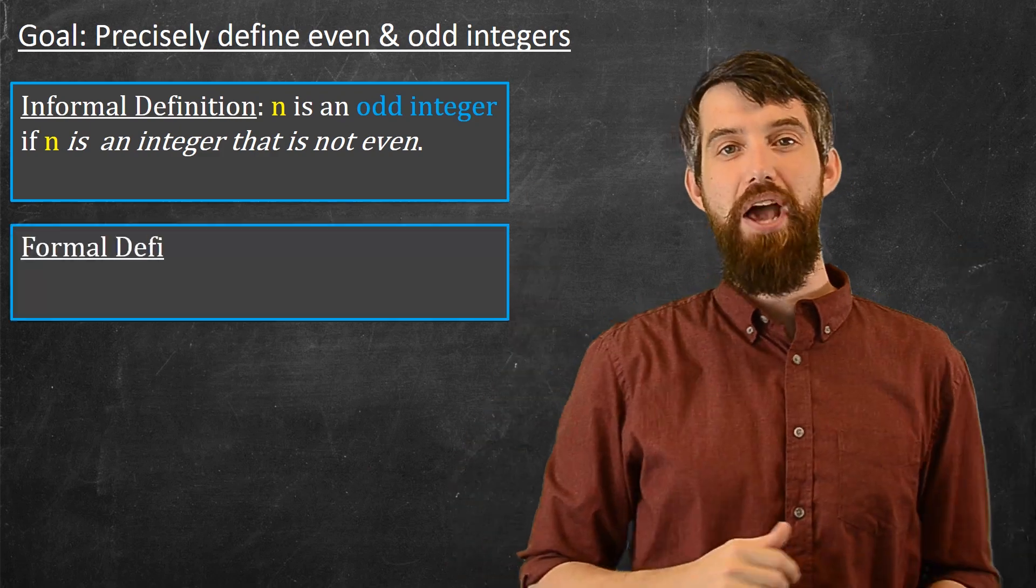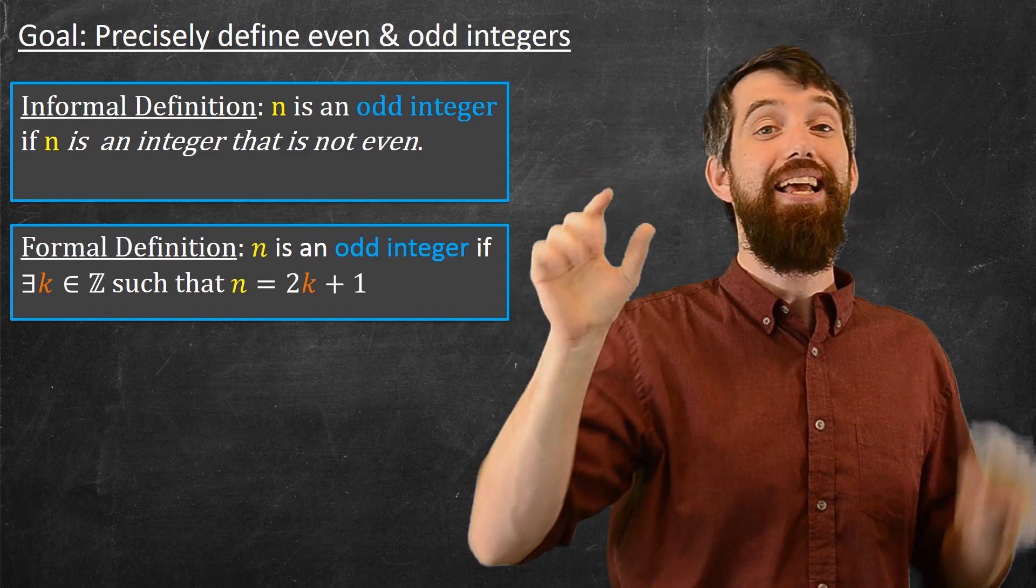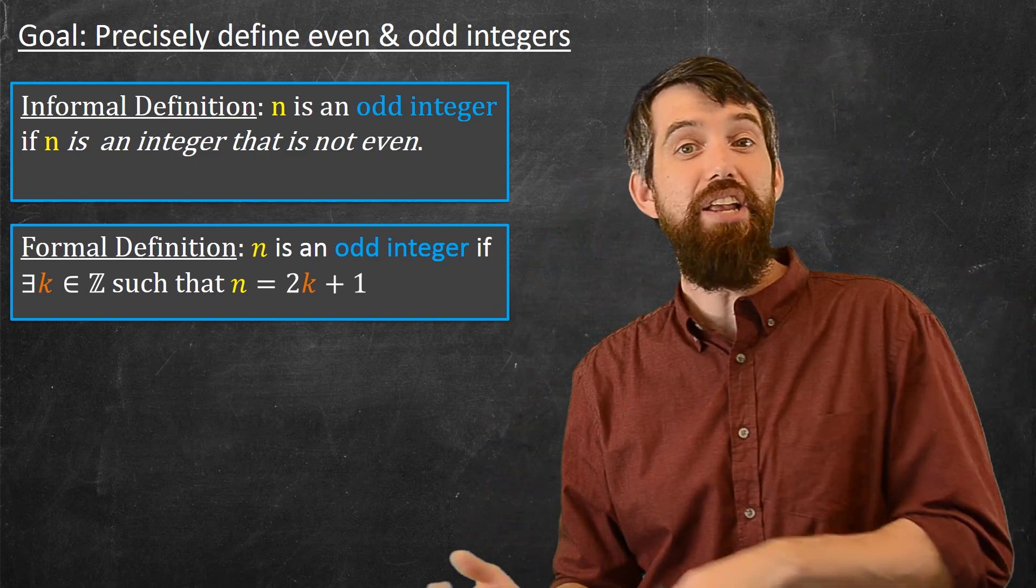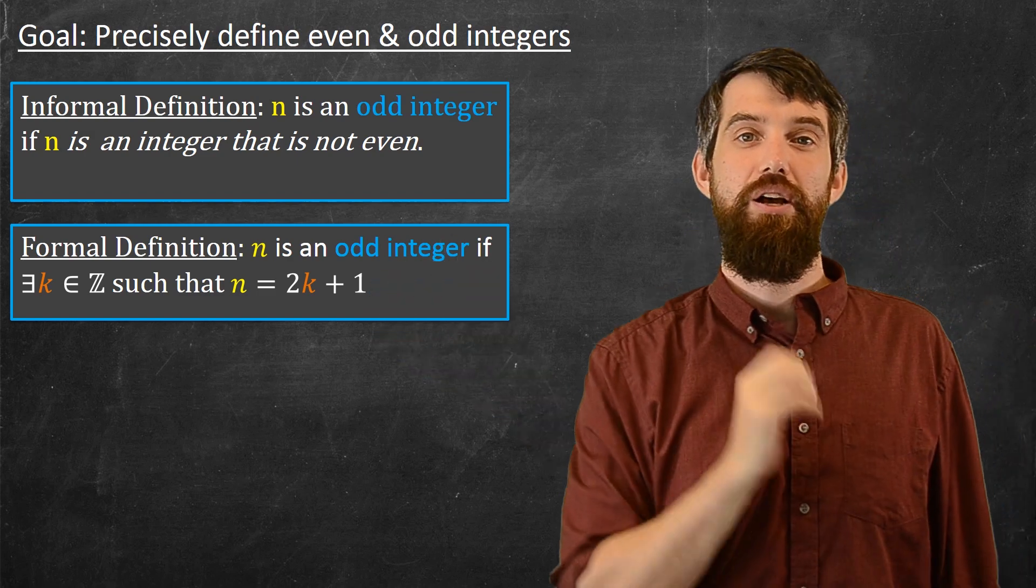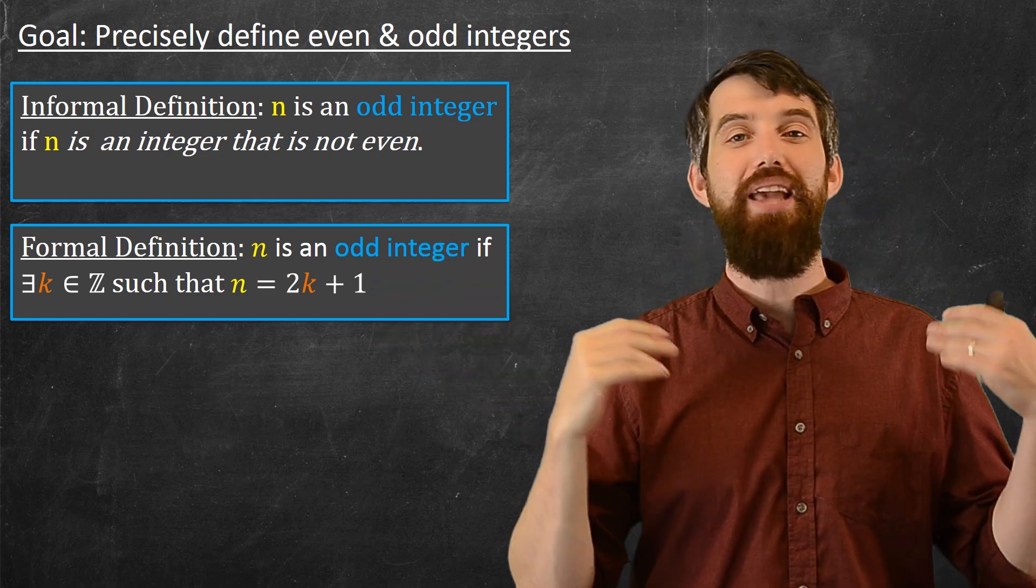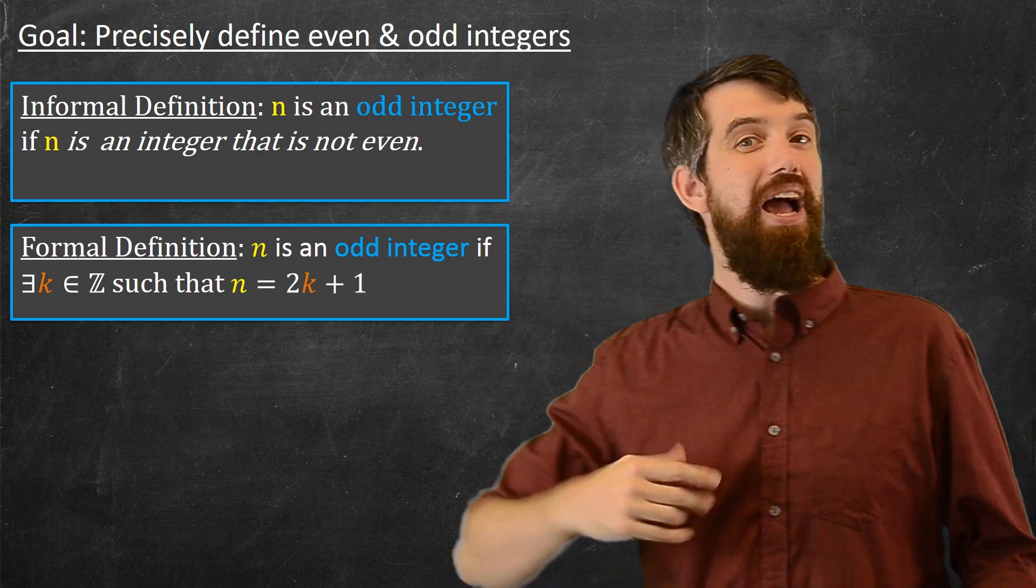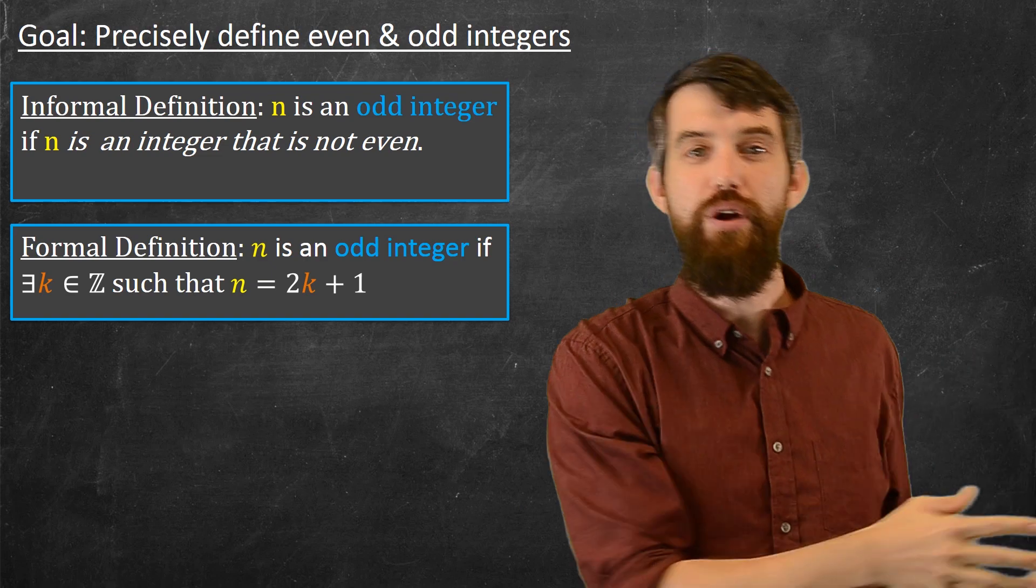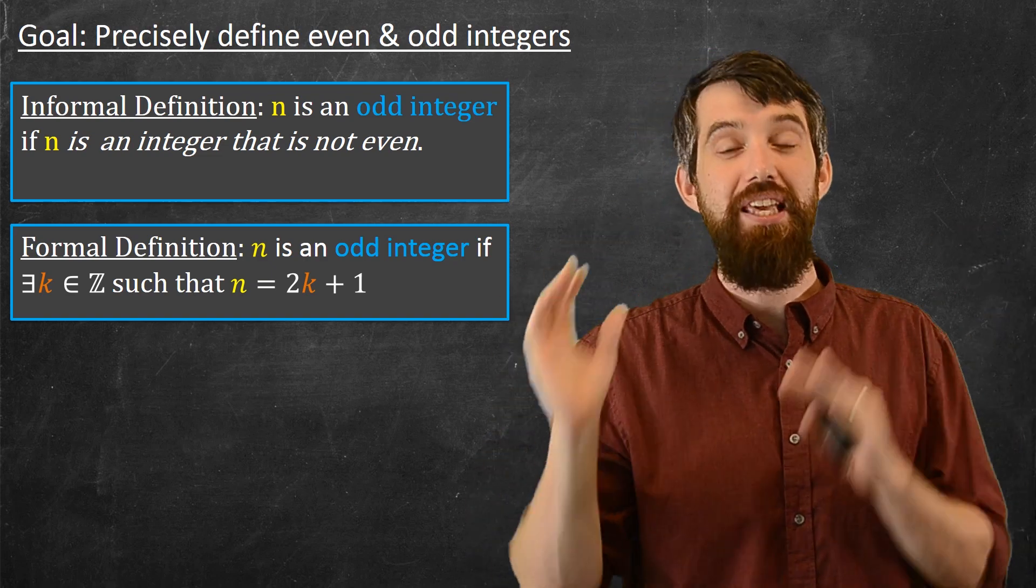So I'm going to use that as my formal definition. Again, it's an existential claim. I'm saying there exists a k in the integers such that your odd integer n can be written as twice k plus 1. And now, again, I have a precise, formal definition of what I mean by odd integers. There's an equation here. I can substitute that equation into other equations, and I can use these definitions to make proofs about the even and odd integers.